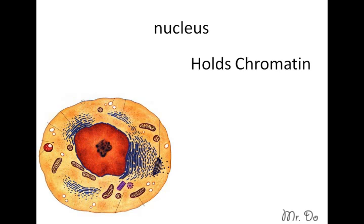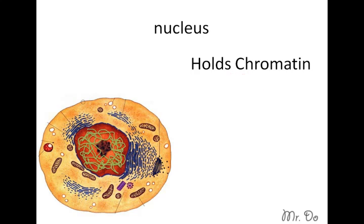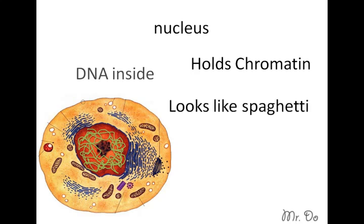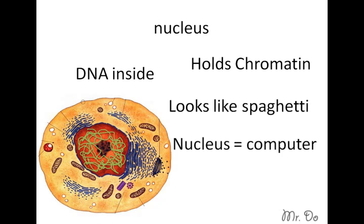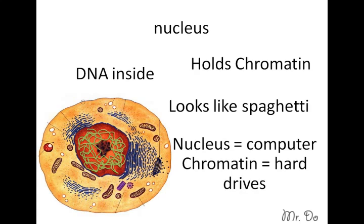The nucleus holds information. The information inside the nucleus is called chromatin — it's kind of squiggly, spaghetti-like, and it holds DNA inside of it. If you think of the nucleus as a computer, then the chromatin are the hard drives, and the DNA is equivalent to the files inside the hard drive.